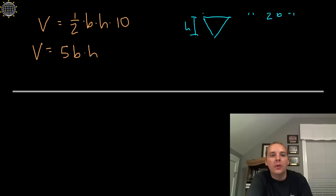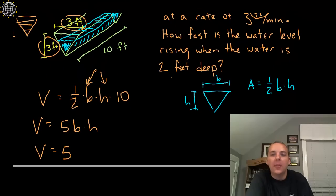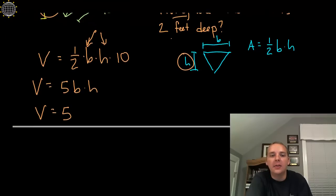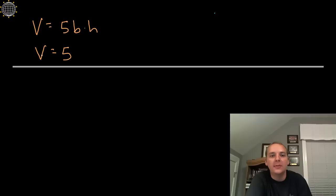So we can actually reduce this down to either the volume equals 5B² because base times base, or 5H², H times H. Now we have to make a decision on which one. Now this is where I'm going to look at the question. They're asking me about how fast the water level is rising. That sounds more like the H instead of the B. So I think I'll write this as V = 5H².